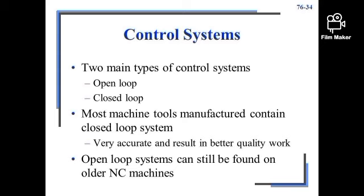Most machine tools manufactured today contain a closed loop system, which yields very accurate results and better quality work. Open loop systems can still be found on older NC machines.